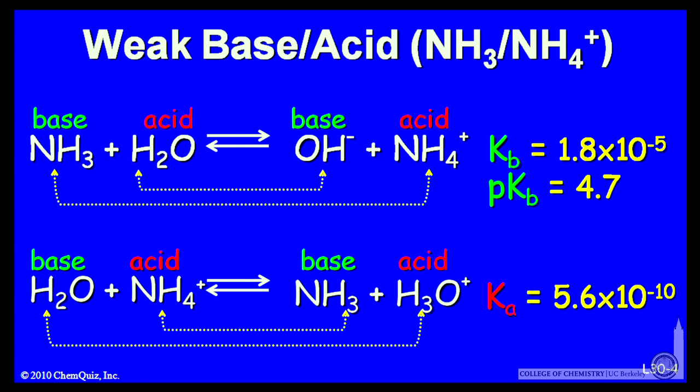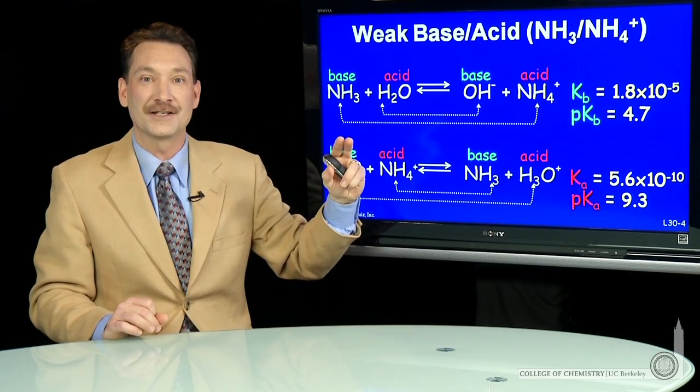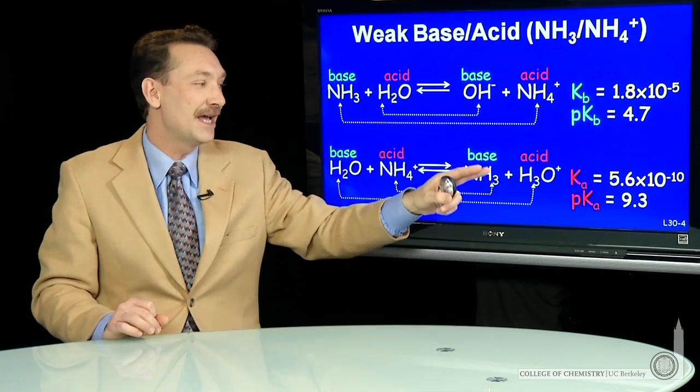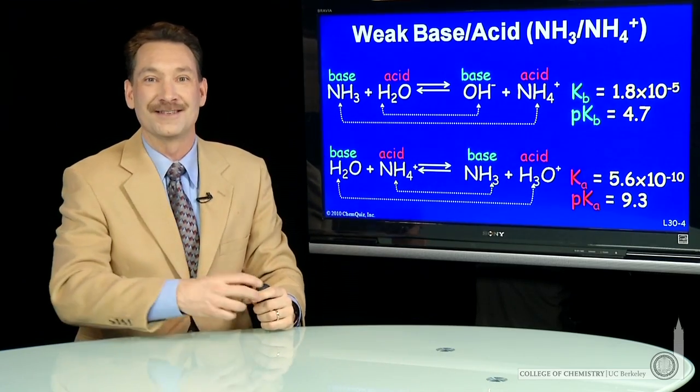This is the conjugate acid of the base NH3. I can write a Ka, 5.6 times 10 to the minus 10, and a pKa. So conjugate base, conjugate acid - I can write equilibrium constant expressions and pKa's and pKB's just as in the weak acid, weak base situation.